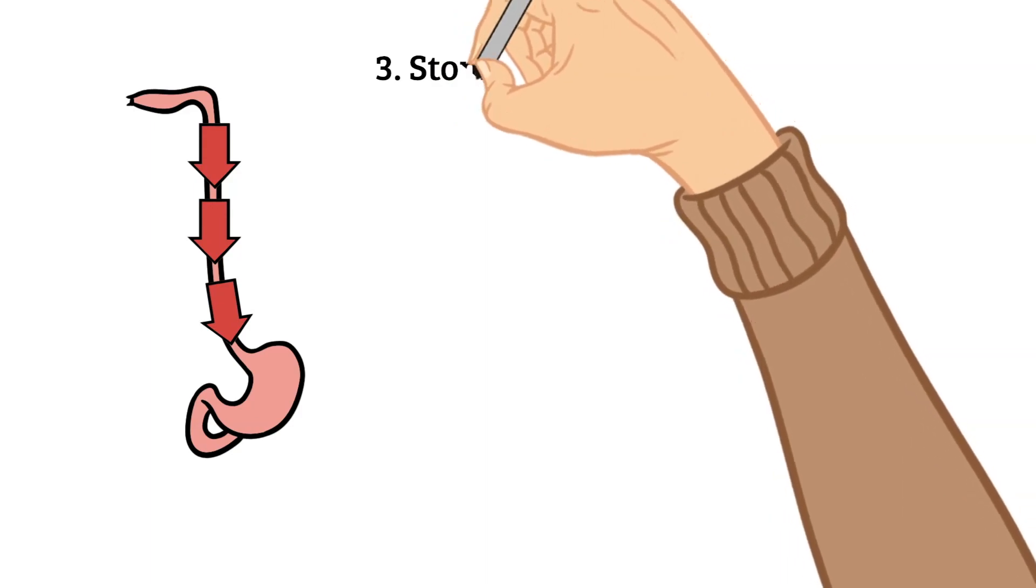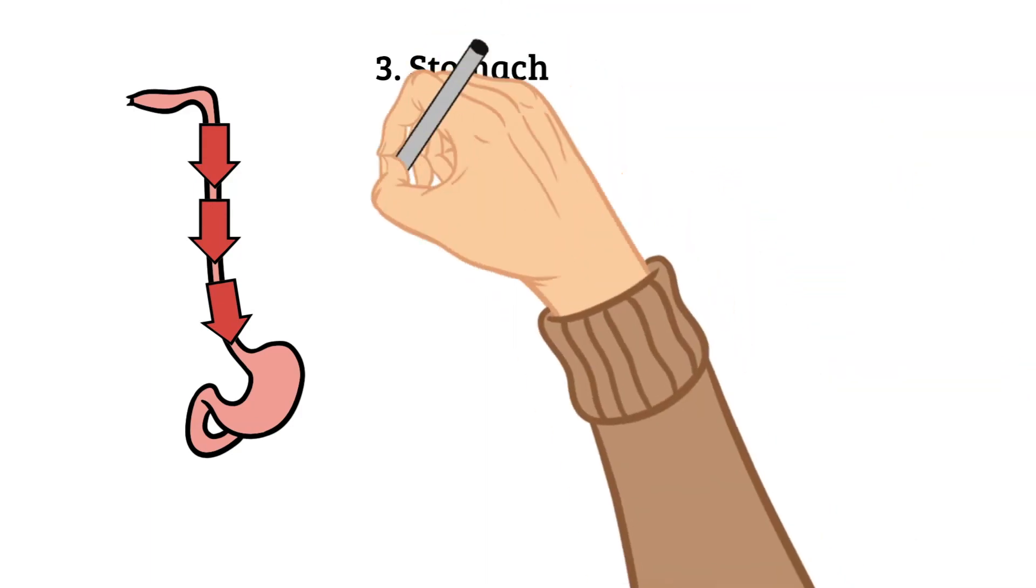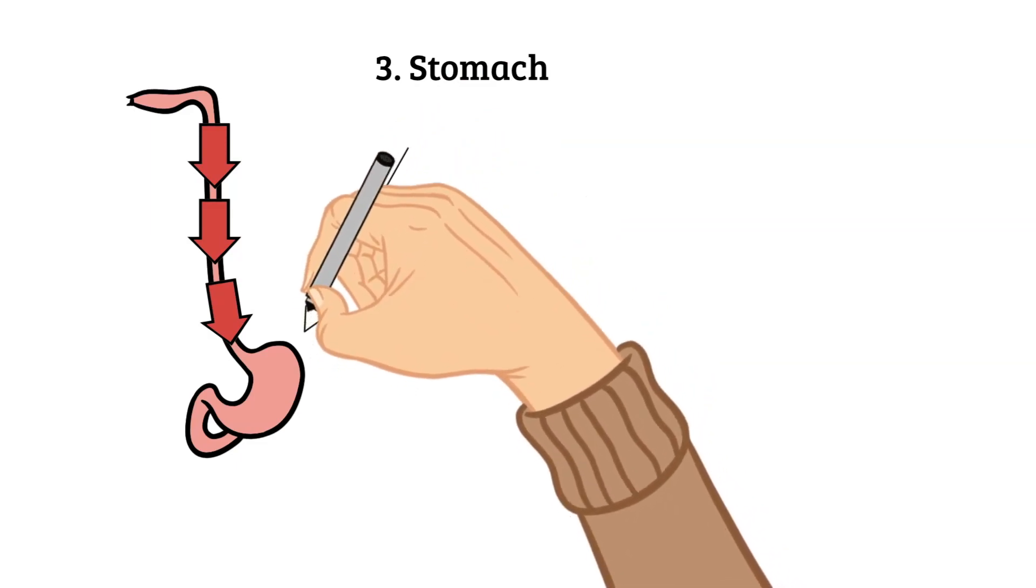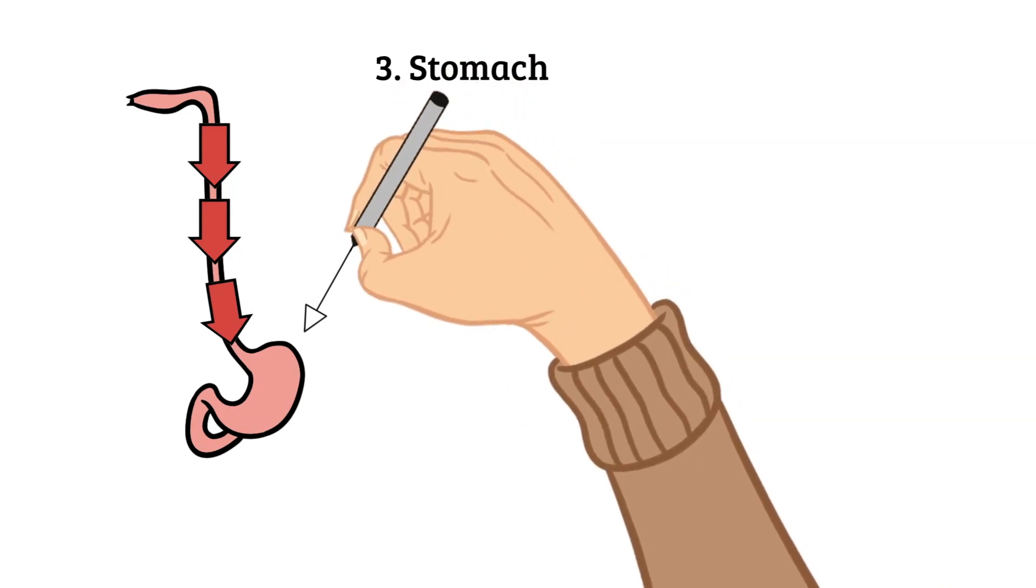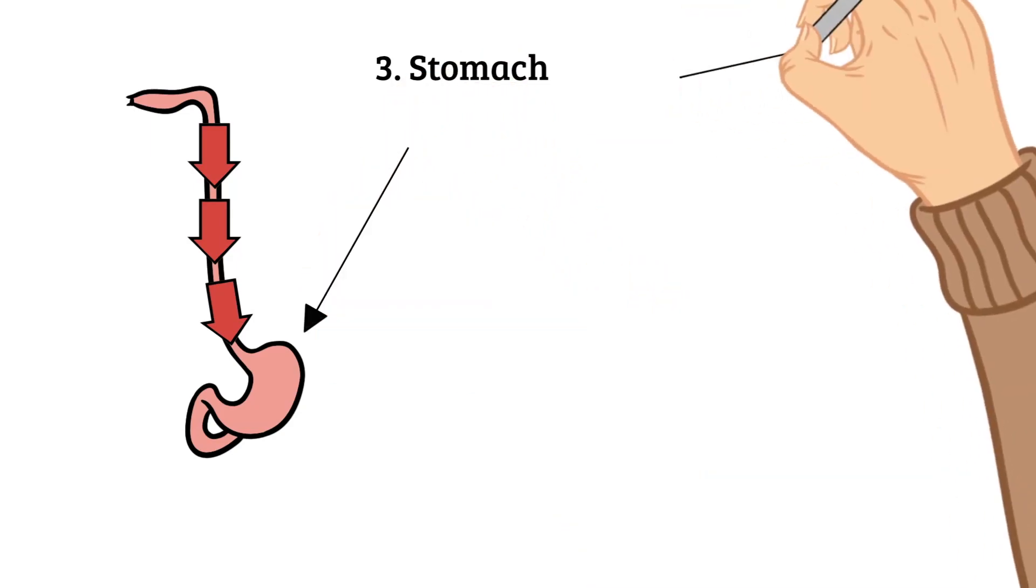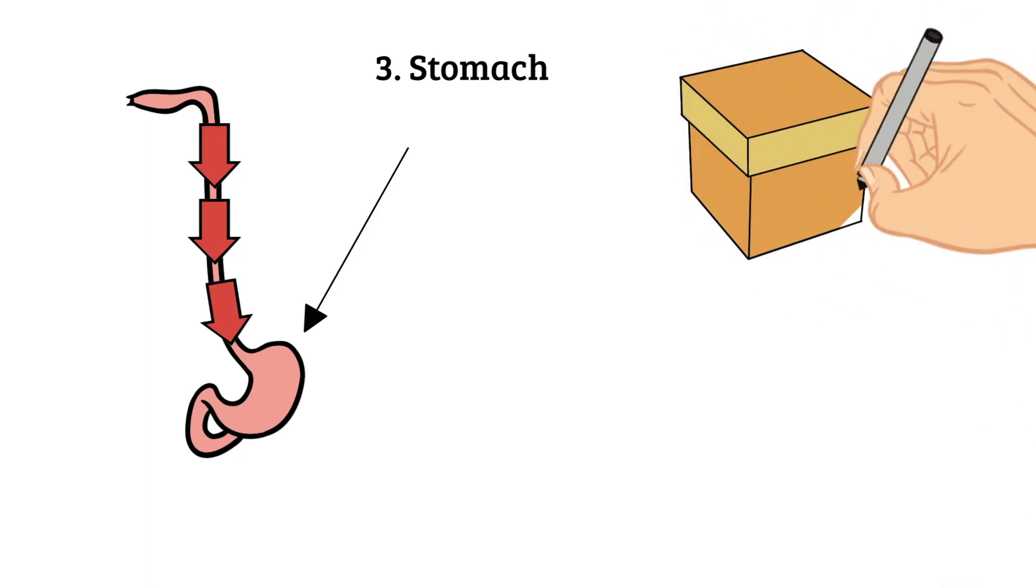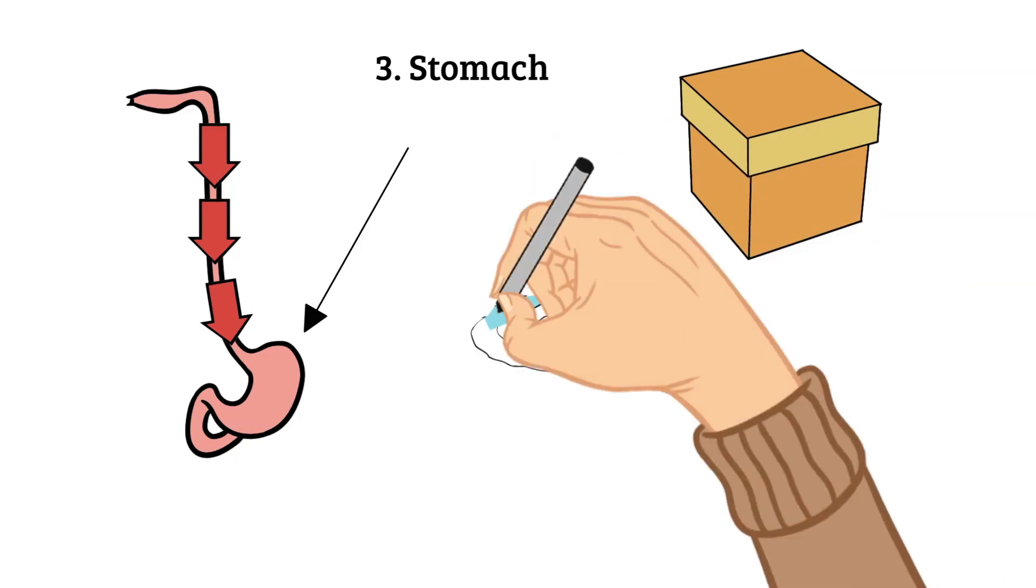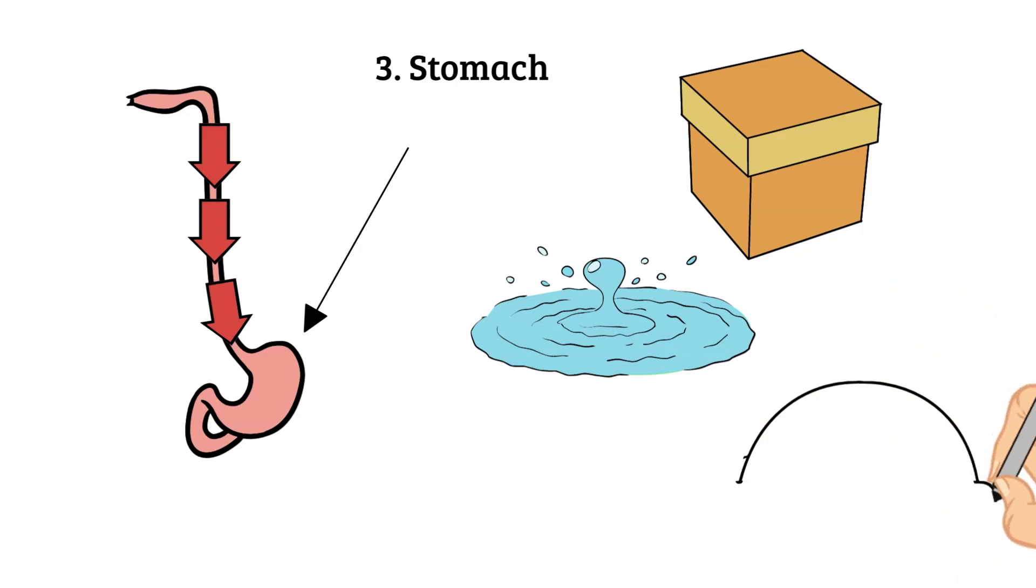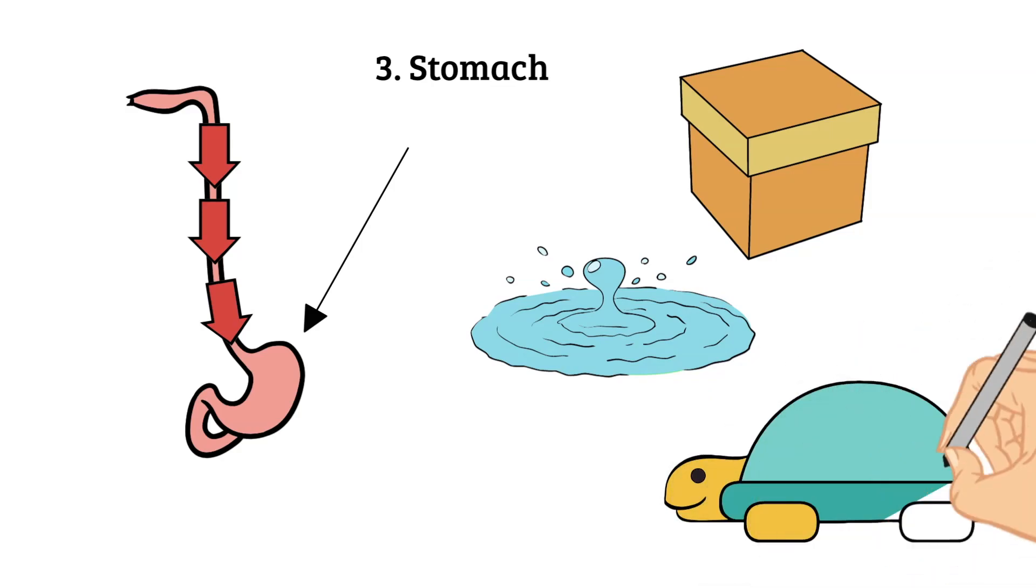Next in our digestive system is the stomach. So you swallow your food and then your food hits your stomach. The stomach is a hollow organ and it actually has three main jobs: one, to store the food you've eaten; two, to break down the food into a liquidy mixture; and three, to slowly empty that liquidy mixture into the small intestine.